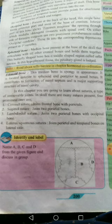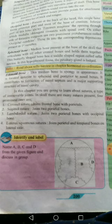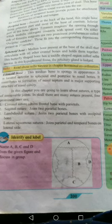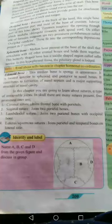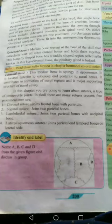The ethmoid bone contributes to the formation of the nasal septum and is the major supporting structure of the nasal cavity. It divides the nasal compartment into two parts.